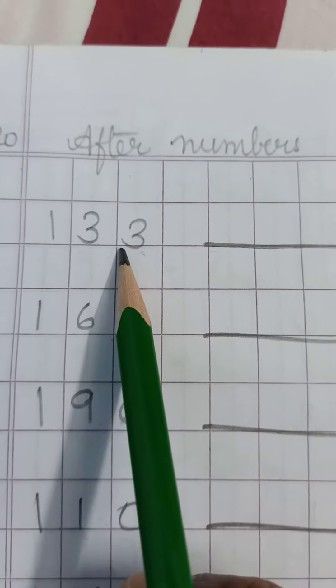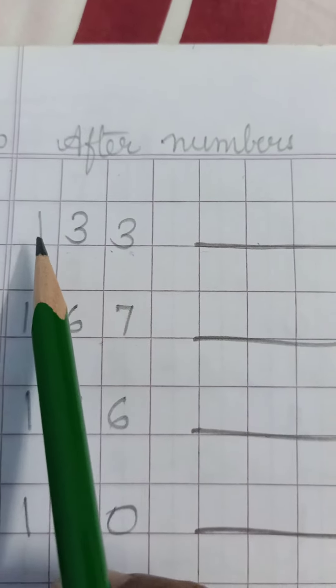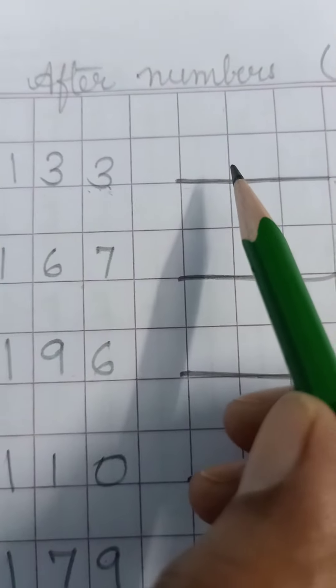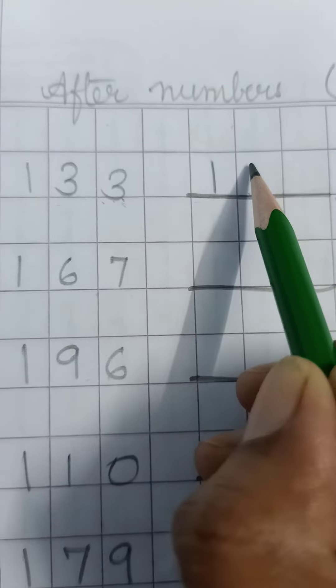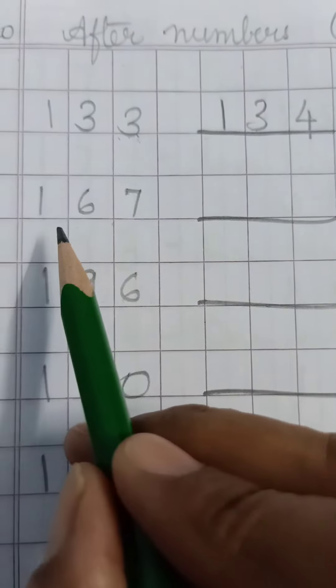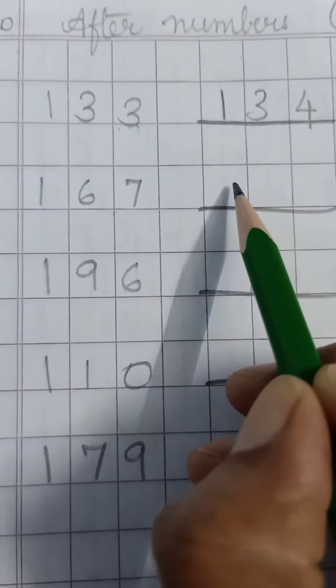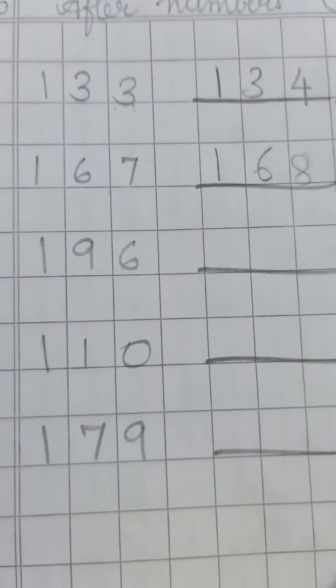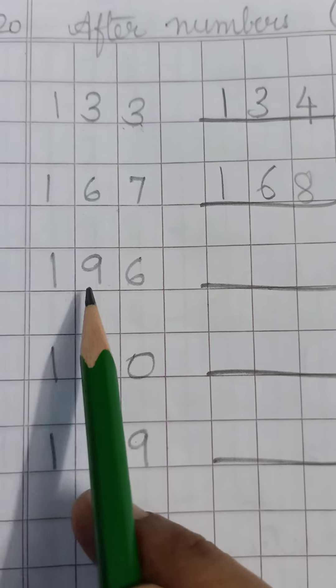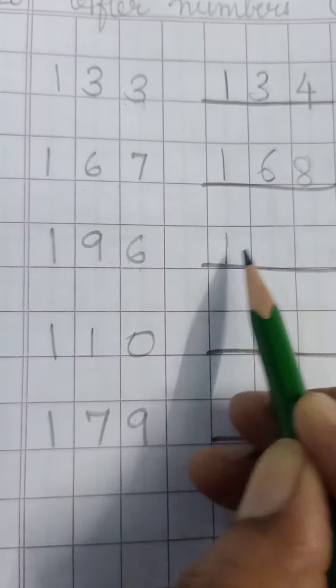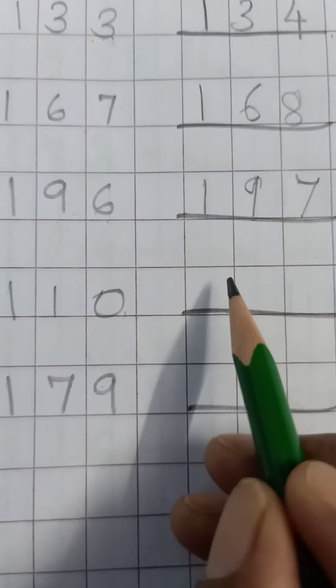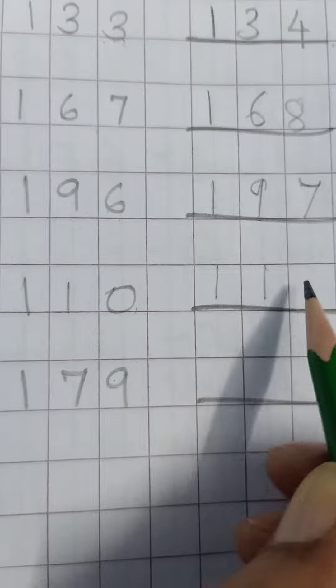Here 133 is given. After 133, what will come? Yes, 134. After 167, which number will come? 168. In the same way, 196, then 197. After 110, 111 will come.